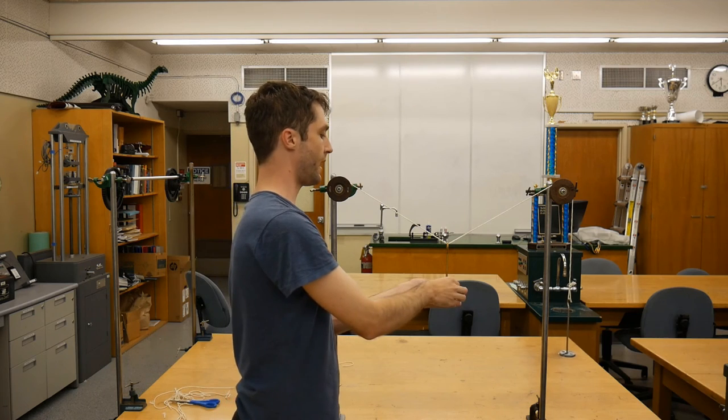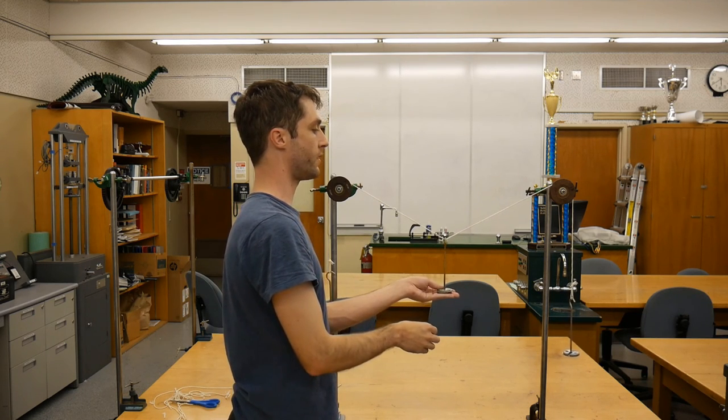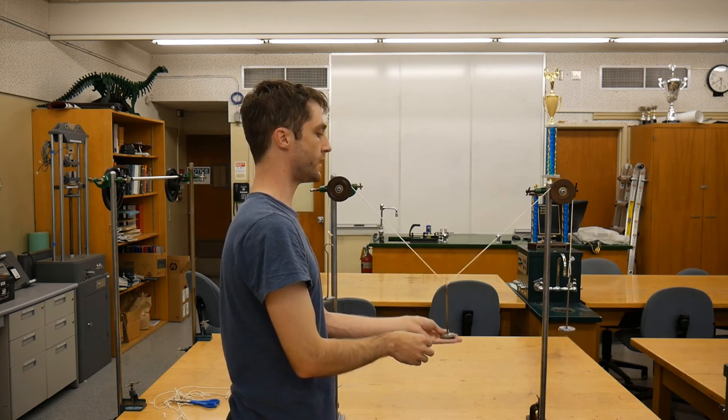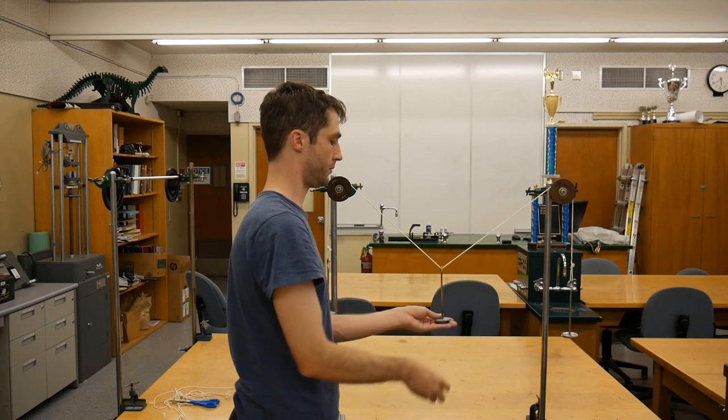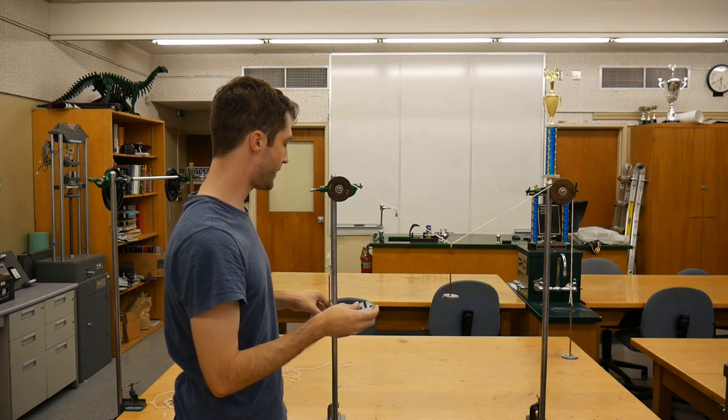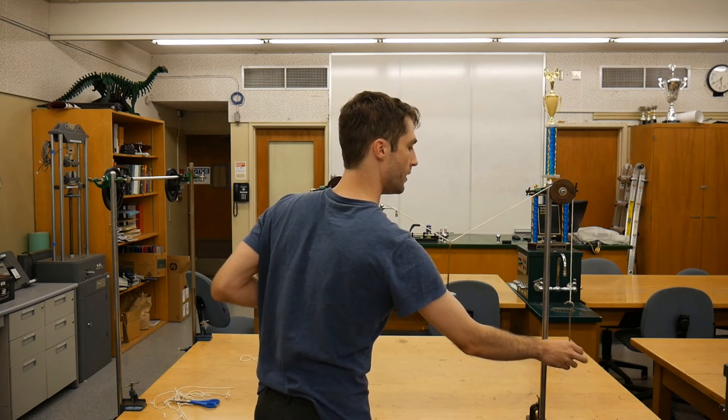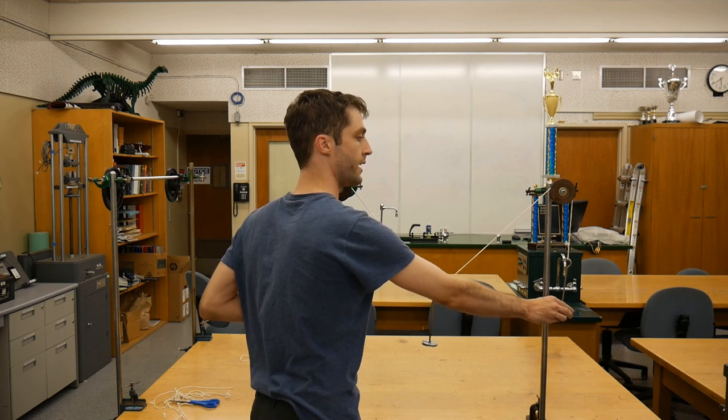Next, get a 20 gram mass and place it on the middle hanger, and observe whether this angle increases or decreases as a result. Remove the 20 gram mass, and get two 50 gram masses, and place these on the two end hangers, and observe whether the angle increases or decreases as a result.